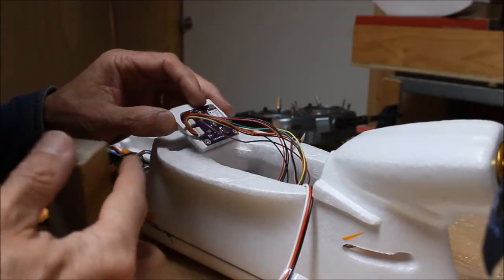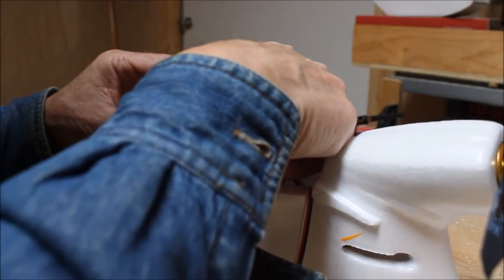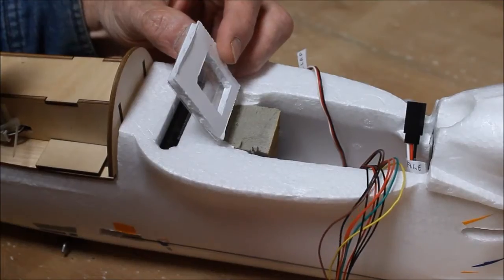Now, let's look at how the GPS module was mounted. Like the receiver and APM units, the GPS module also uses a foam board cradle.